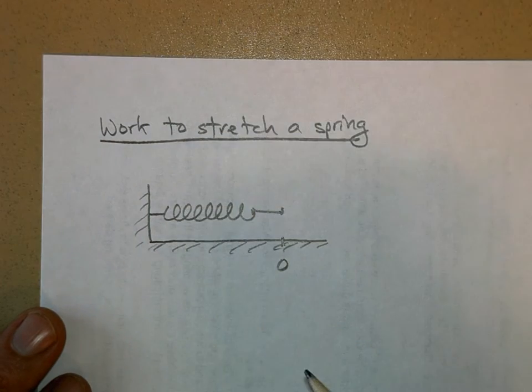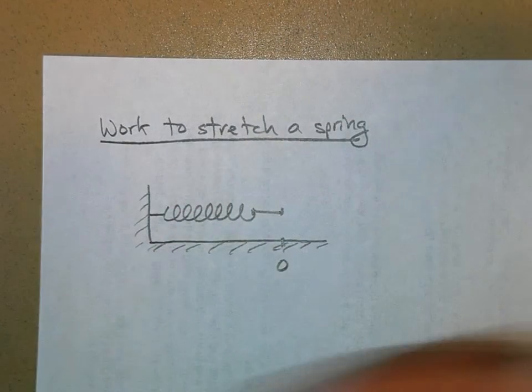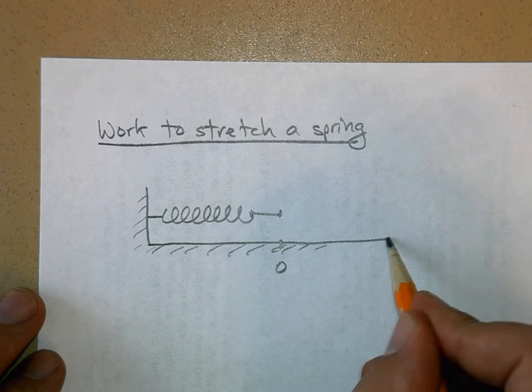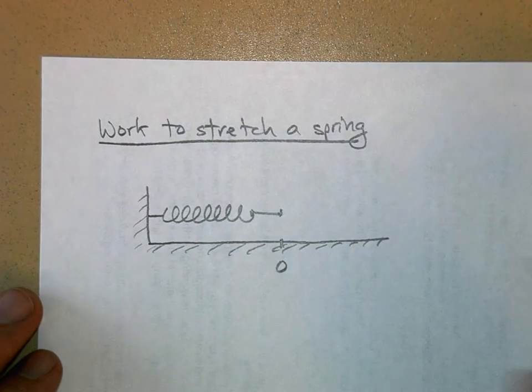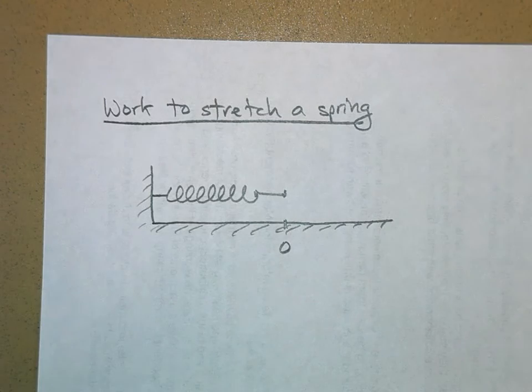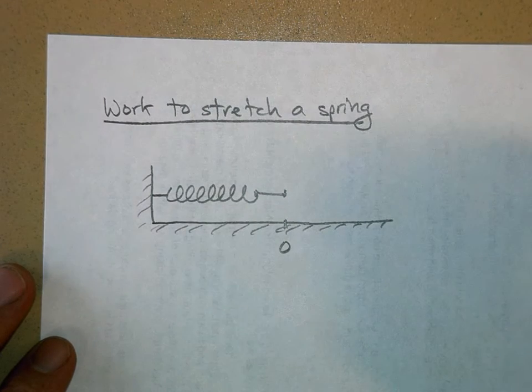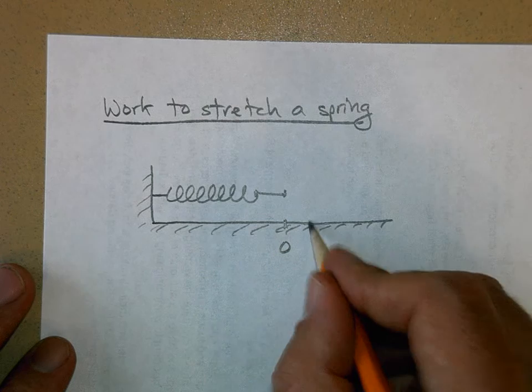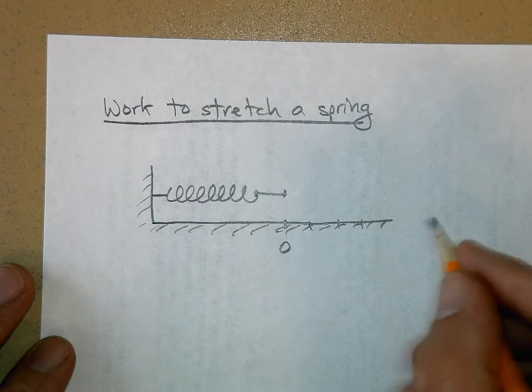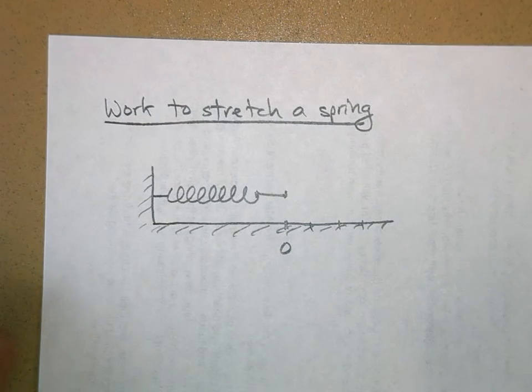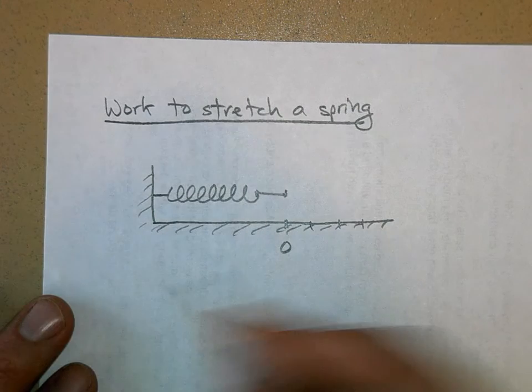But then I'm going to pull on it to the right. Now it's going to pull back, right? So I'm going to pull it to the right, and what I can do is draw a graph of how much force it takes me to pull that spring depending on how far we are. These can be in centimeters, millimeters, or meters if the spring is big enough. So what we're going to do is graph the force that we apply to the spring as a function of x.